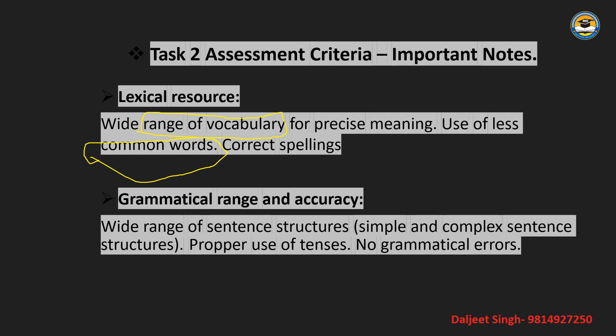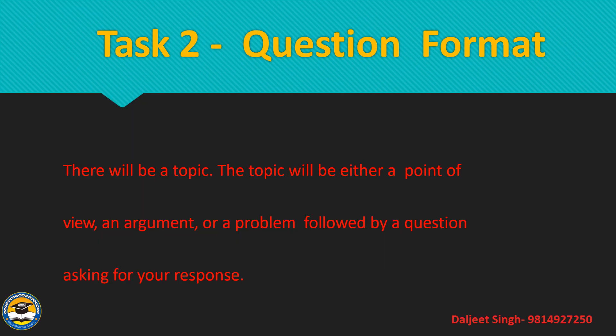The fourth criterion is Grammatical Range and Accuracy — a wide range of sentence structures. This means there will be simple and complex structures, proper use of tenses, no grammatical errors, and proper sentence structure. This is our assessment criteria.